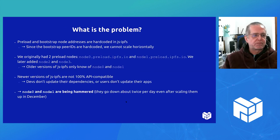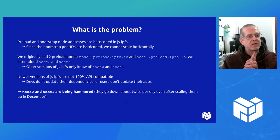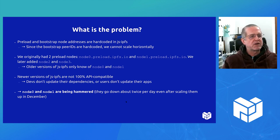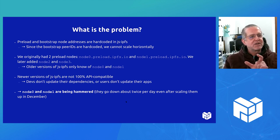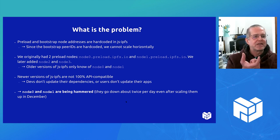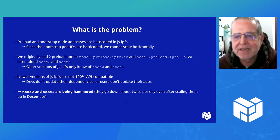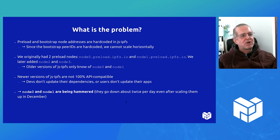So what is the problem with the preload nodes? It turns out that the preload nodes also need to act as bootstrap nodes. The bootstrap node addresses are hard-coded in JSIPFS, in the library itself. You can overwrite it if you're running a node app or writing an application on top of it, but people usually don't do that. And since the peer IDs are hard-coded, you cannot just add more bootstrap or preload nodes because they will not connect to them. PL had two preload nodes, node 0 and node 1. Node 2 and node 3 were added later, but older versions of the library only know of node 0 and node 1.